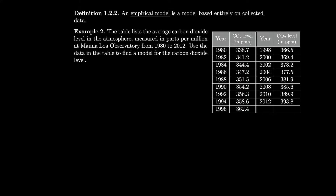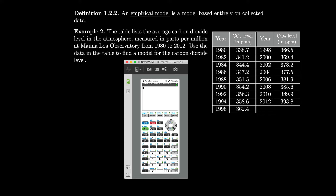An empirical model is a model based entirely on collected data. For example, the table lists the average carbon dioxide level in the atmosphere, measured in parts per million at Mauna Loa Observatory from 1980 to 2012. Let's use the data to find a model for the carbon dioxide level. Let's pull up our calculator emulator, go over to stat, hit enter for edit, and start typing our years into L1. Then we'll move over and type the CO2 level into L2.